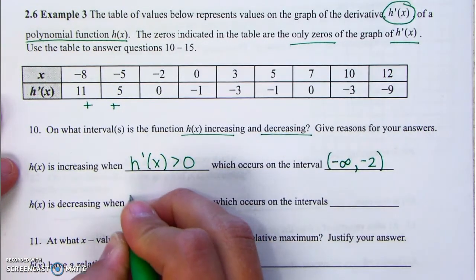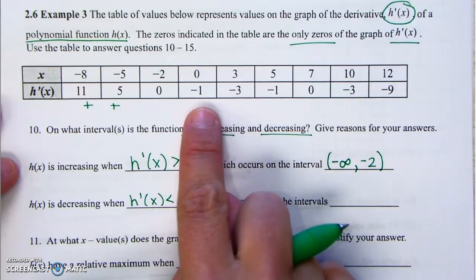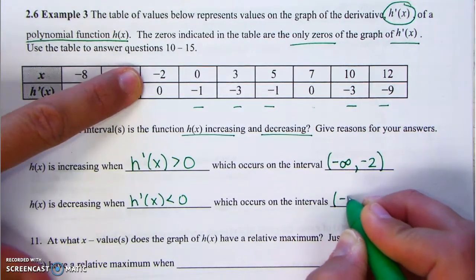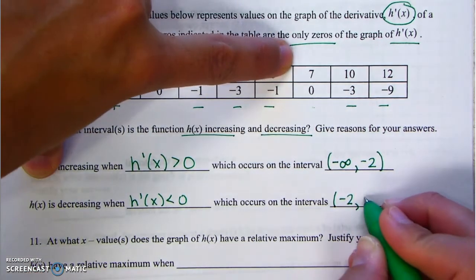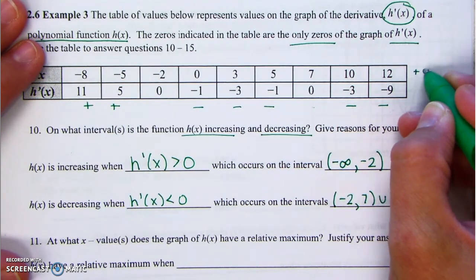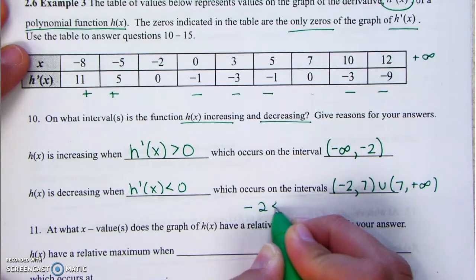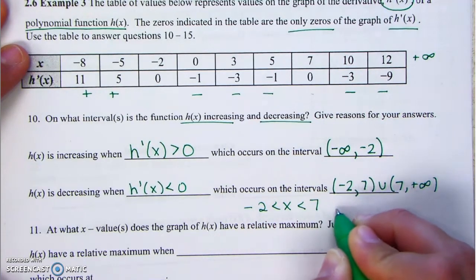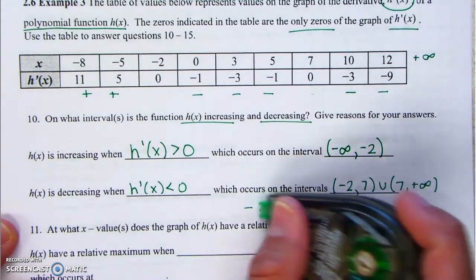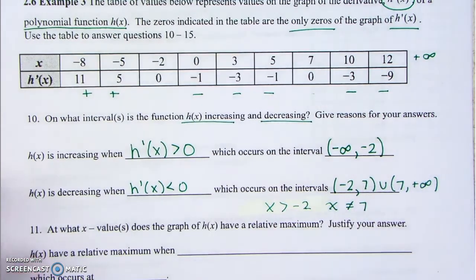h is decreasing when the first derivative is negative. The derivative is negative on two intervals: from negative 2 to 7, and from 7 to positive infinity. We don't include 7. Another way to write this: x is greater than negative 2 but less than 7, and then x greater than 7.